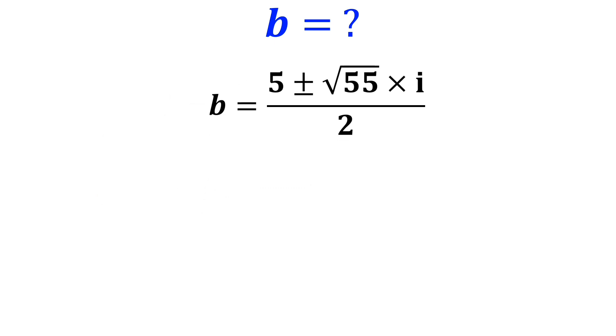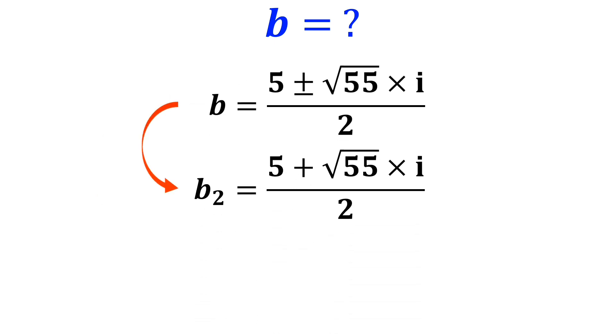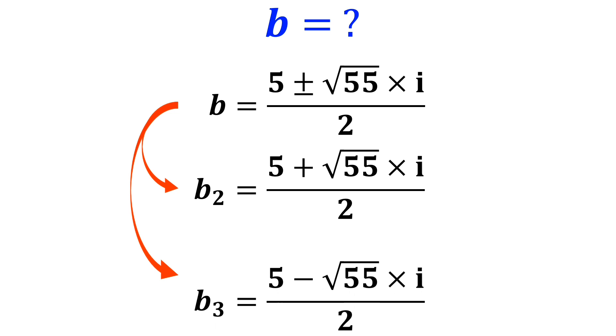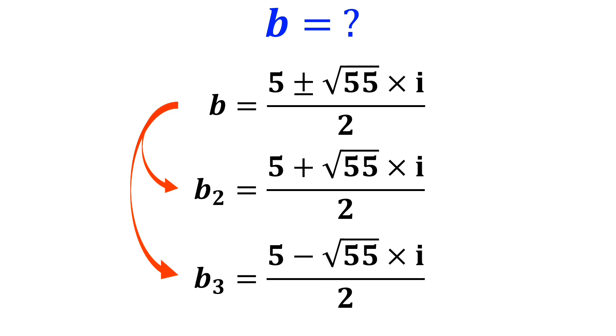So the second solution is 5 plus the square root of 55 times i, over 2, and the third solution is 5 minus the square root of 55 times i, over 2.